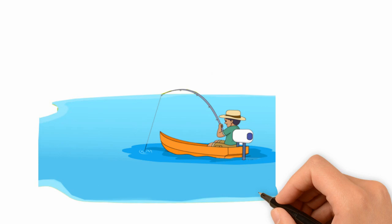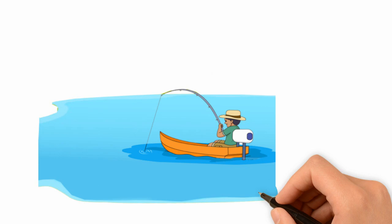Generally, when pressure is low and increasing, fish will go lower in the water column and the bite will be slow. They're gassy and don't want to eat.